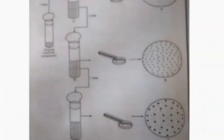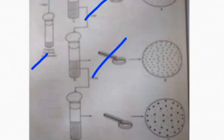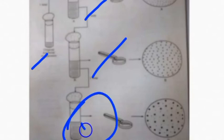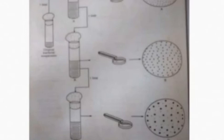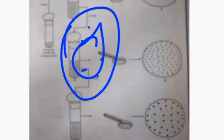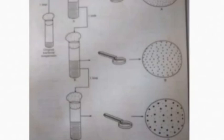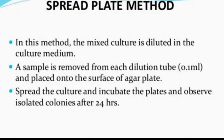Next, we see the spread plate method. In this method, a mixed culture is diluted in dilution tubes. The diluted sample is spread on the surface of a solid agar plate using a spreader. Colonies develop on the surface, making it easy to isolate pure colonies. A microscope can be used to examine the microorganisms.